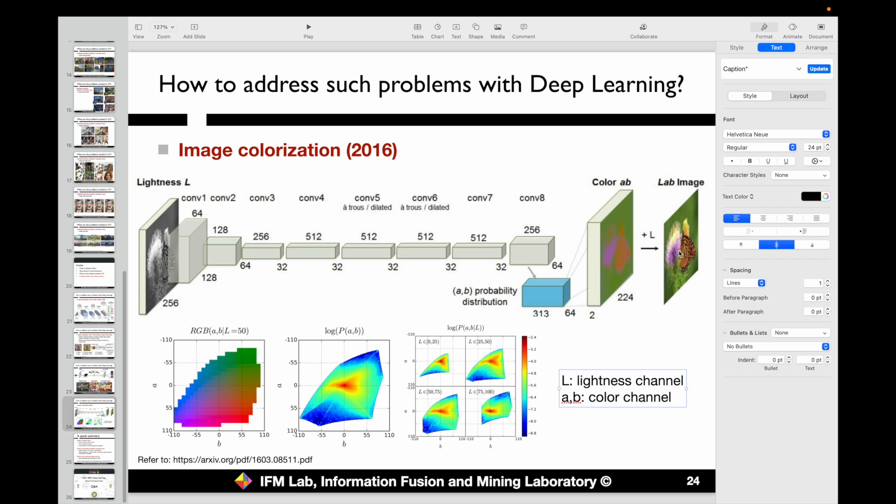The main tricky part will be how can we decide the colors for each pixel inside the input image. The way we do this is via a distribution inside a color space.